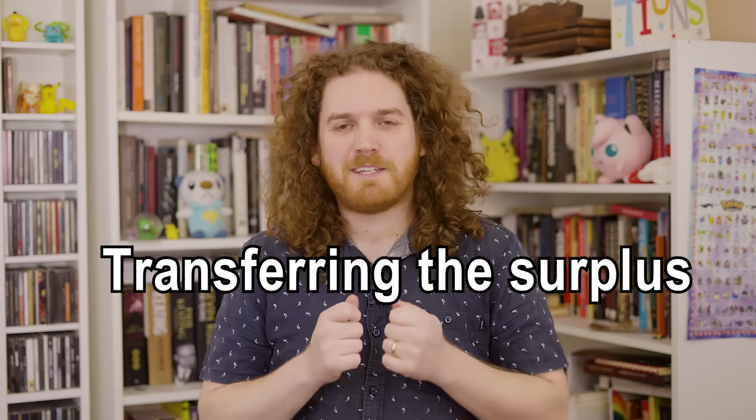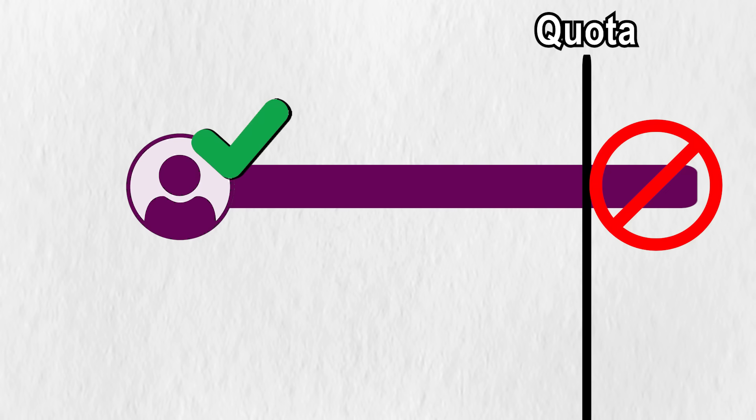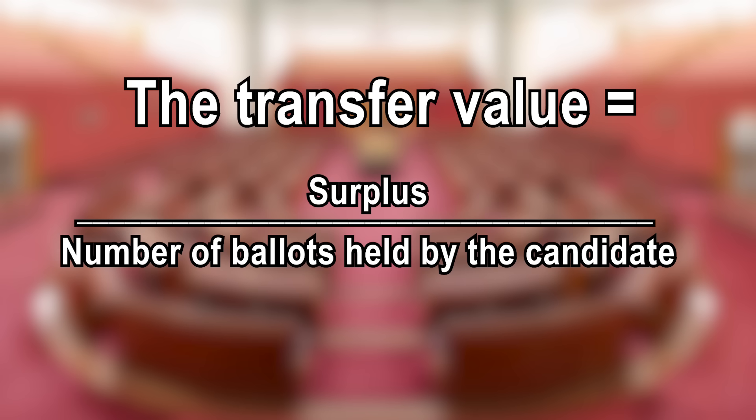Next comes transferring the surplus. If you've got a quota then you've got a quota — any more votes doesn't make you any more elected. Don't be greedy. Surplus votes are transferred to candidates who were the second choice of voters on those ballot papers. They don't divide votes into votes that elected the candidate and surplus votes, because that's impossible to determine, so they transfer those votes at a reduced rate. The transfer value is calculated by the surplus divided by the number of ballots held by the candidate.